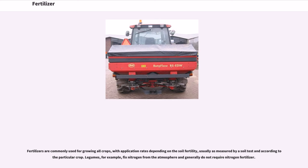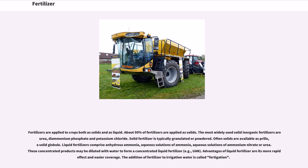Fertilizers are commonly used for growing all crops, with application rates depending on the soil fertility — usually as measured by a soil test — and according to the particular crop. Legumes, for example, fix nitrogen from the atmosphere and generally do not require nitrogen fertilizer. Fertilizers are applied to crops both as solids and as liquid. About 90% of fertilizers are applied as solids. The most widely used solid inorganic fertilizers are urea, diammonium phosphate, and potassium chloride. Solid fertilizer is typically granulated or powdered; often solids are available as prills, a solid globule.